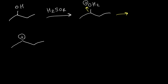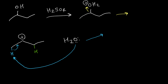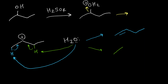This carbocation has two different types of hydrogen on its left and right carbons. Water has two possibilities to form an alkene. If water attacks the blue hydrogen, these bonds come here and it forms 1-butene. But water can also attack the green hydrogen, and then this bond moves here, so we have a double bond between those two carbons.